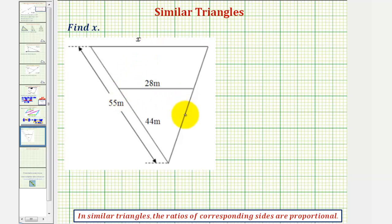Sometimes when we have overlapping triangles, it's a little more challenging to identify the corresponding sides. Notice how we have this larger triangle, and then we also have this smaller triangle here.